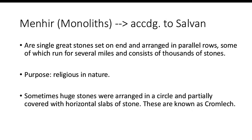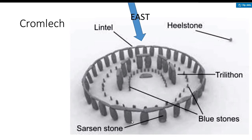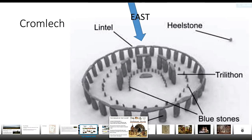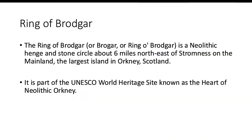Menhir monoliths are religious in nature. Sometimes huge stones were arranged in a circle and partially covered with horizontal slabs — just like in the formation of Stonehenge. When stones are arranged in a circular formation, it is called a cromlek. The best example is Stonehenge in England. Its method of construction is the post and lintel system.